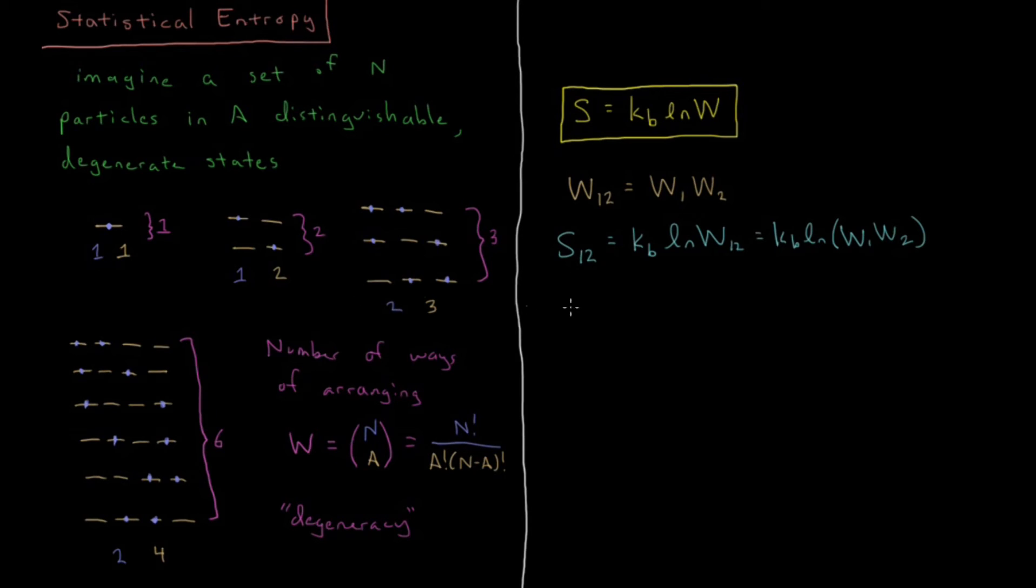And you know when you have a product inside of a logarithm, you can separate it out into a sum of logarithms. So kB log W1 plus kB log W2.